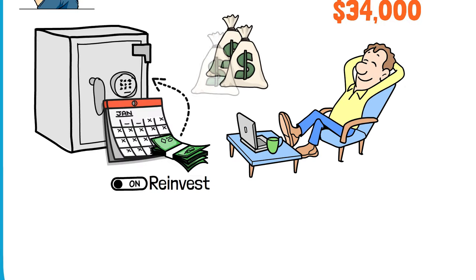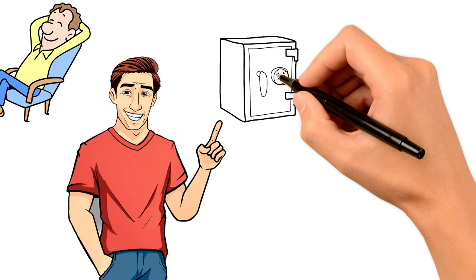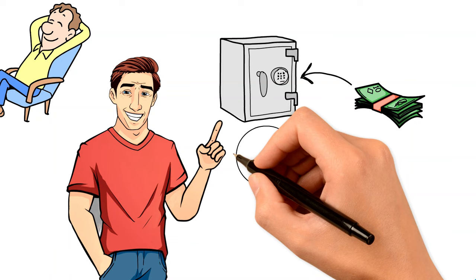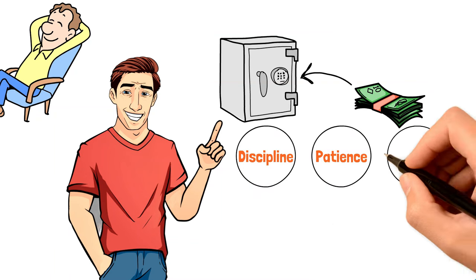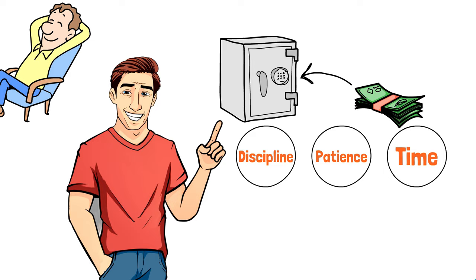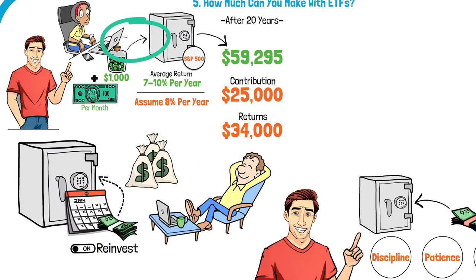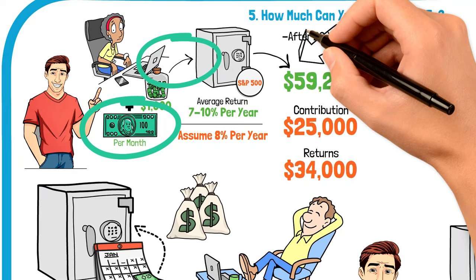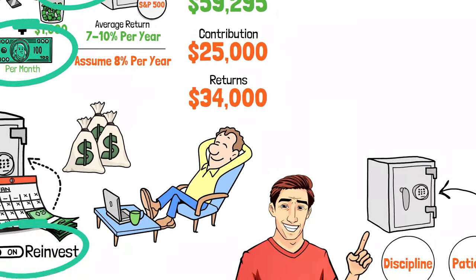While no investment comes without risk, and past performance is not indicative of future results, the math behind ETFs shows that with a disciplined approach, patience, and time, you can potentially build a substantial nest egg. Remember, the key is to start early, keep contributing regularly, and reinvest those dividends. This strategy aligns with Buffett's philosophy of long-term investing and his belief in the power of compounding.